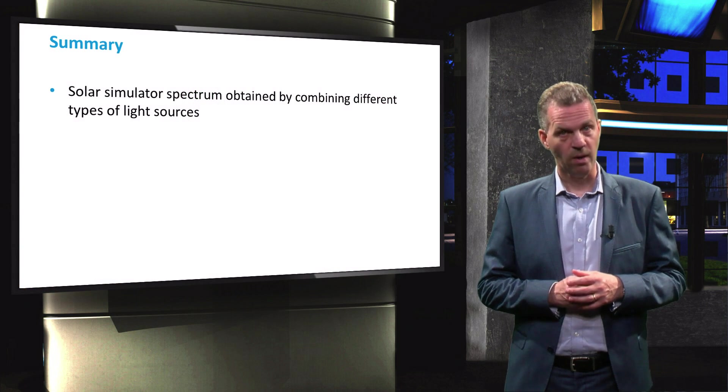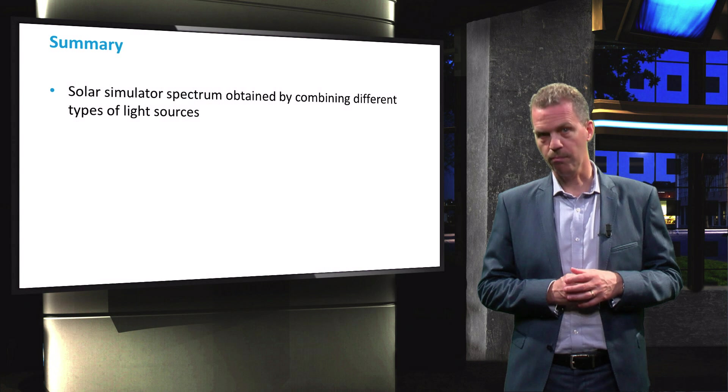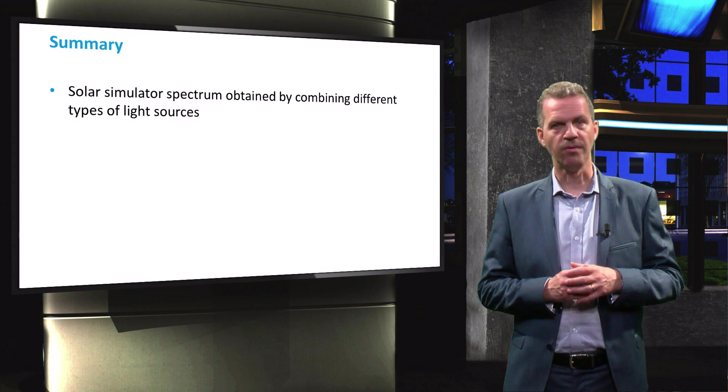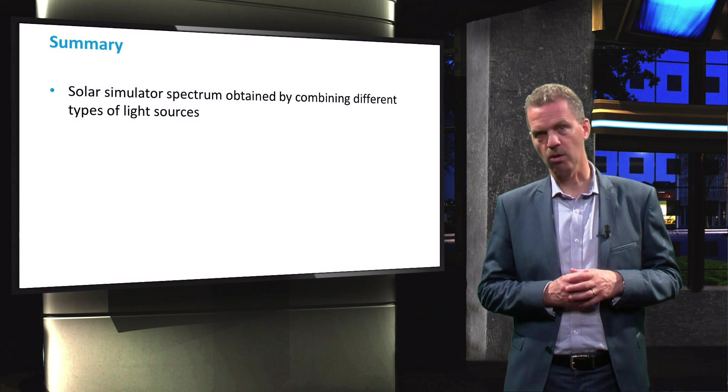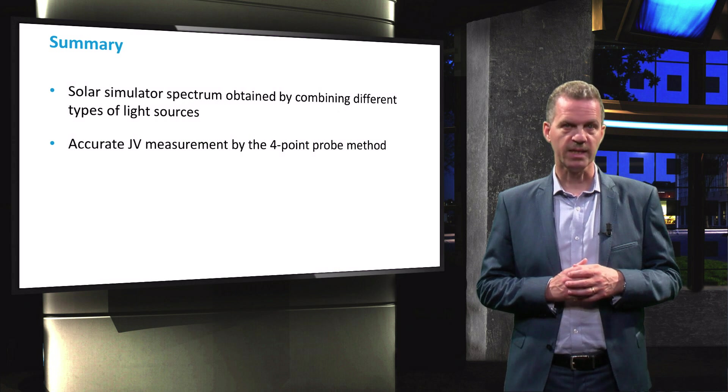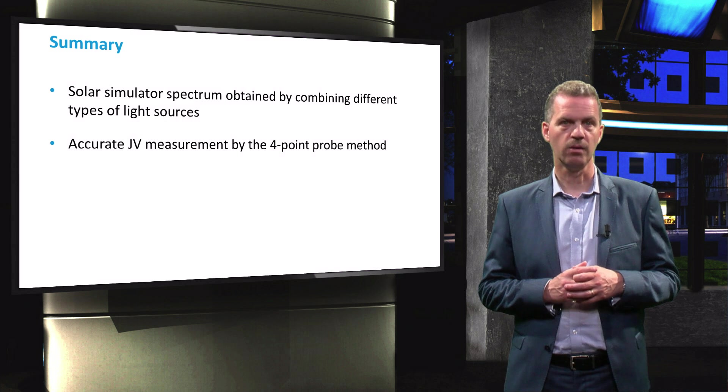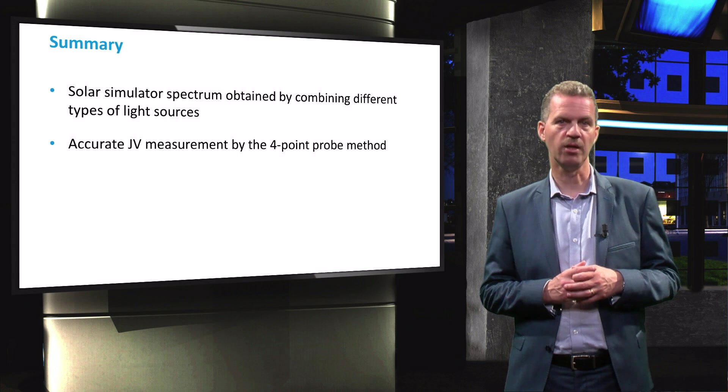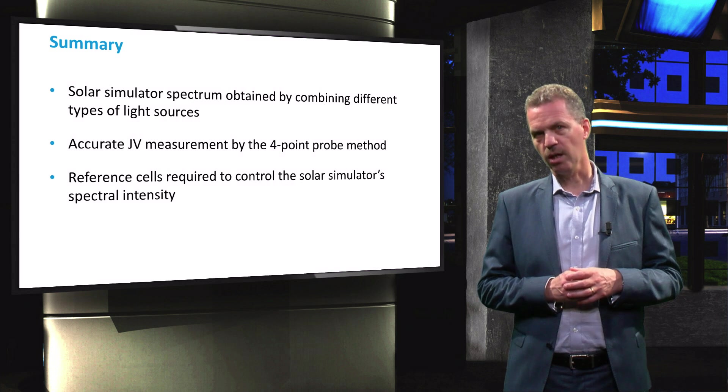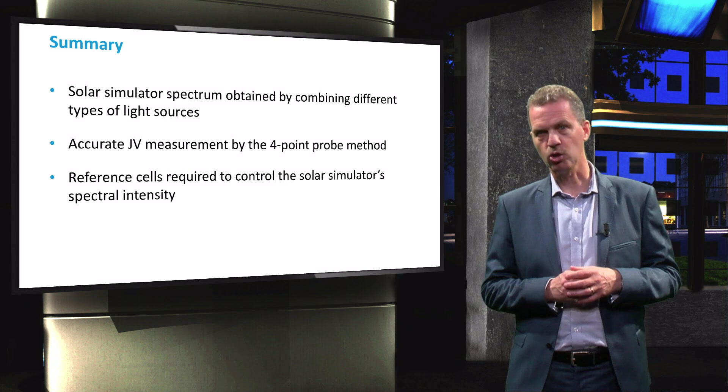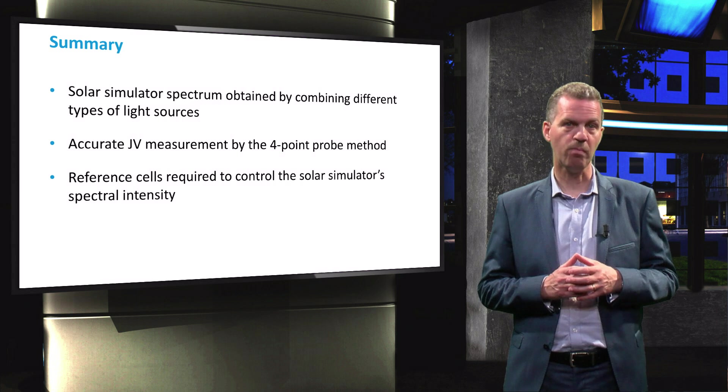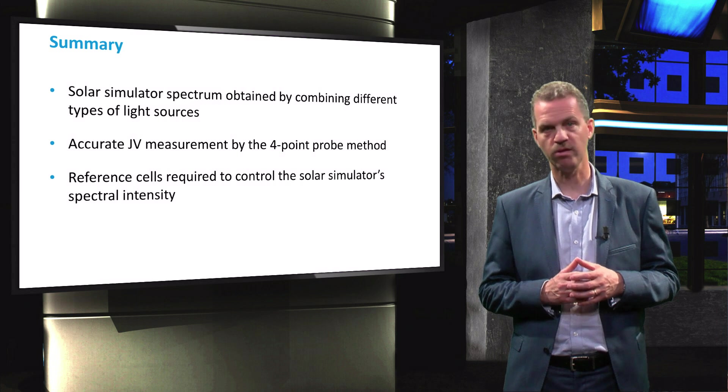To summarize this video, we have discussed that an accurate AM 1.5 spectrum can be obtained by combining different light sources, applying filters and even by using various colors of high-power LEDs. The current that is produced by a single wafer can be significant, which is why the 4-point probe method should be adopted to overcome measurement inaccuracy. Finally, we have discussed that the spectral intensity of the solar simulator should be checked with calibration cells before taking a measurement, since the output power and spectrum of the lamps will degrade over time.